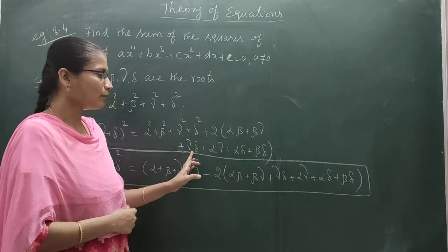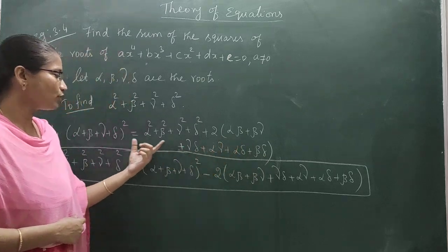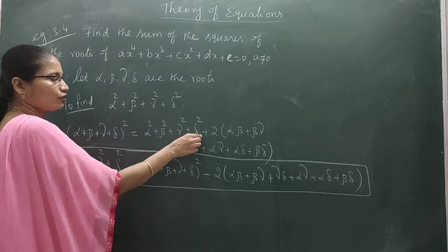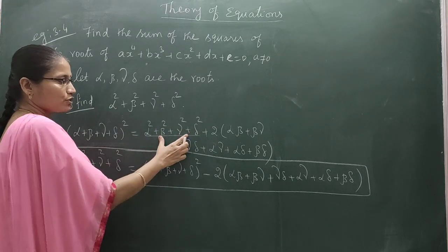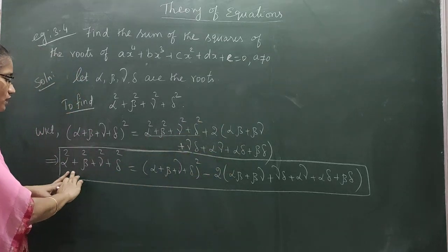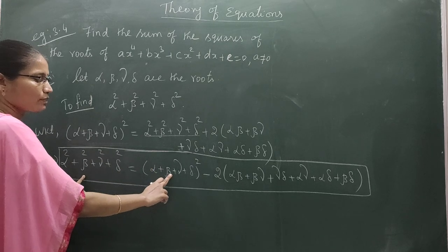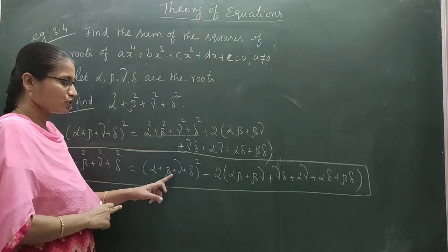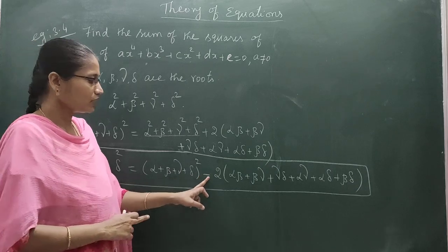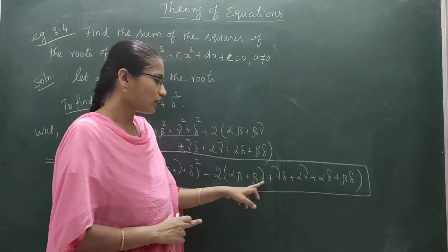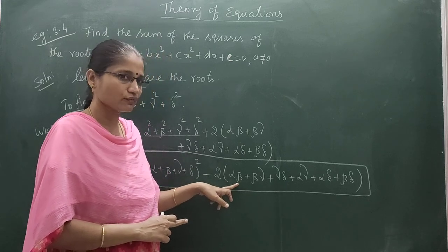The 6 pairwise products are: alpha·beta, beta·gamma, gamma·delta, alpha·gamma, alpha·delta, and beta·delta. This is the algebraic identity we use. Rearranging, alpha² + beta² + gamma² + delta² equals (alpha + beta + gamma + delta)² — which is Σ₁ — minus 2 times the sum of the products of roots taken 2 at a time, which is Σ₂ in Vieta's formula notation.